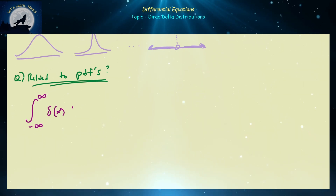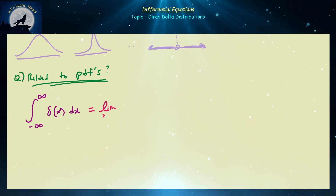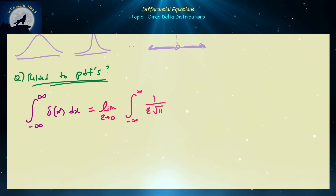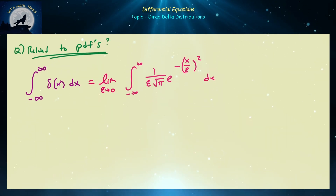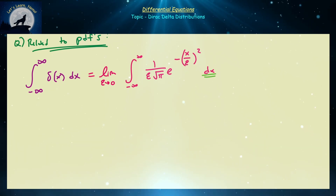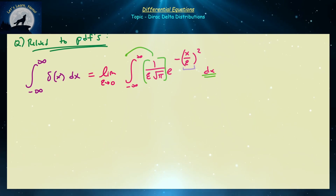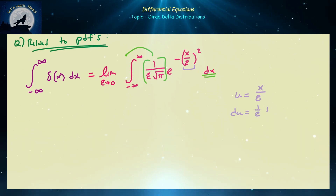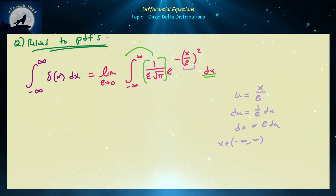The integral from −∞ to ∞ of δ(x) dx equals, by definition, the limit as ε → 0⁺ of the integral from −∞ to ∞ of (1/(ε√π)) · e^(−(x/ε)²) dx. The factor 1/(ε√π) is independent of x and can be factored out. Using the substitution u = x/ε, so du = (1/ε)dx, meaning dx = ε du, and since ε > 0 the bounds remain −∞ to ∞.